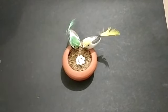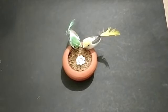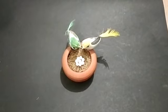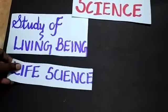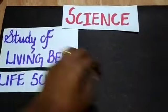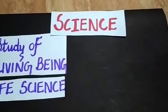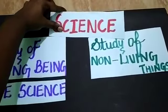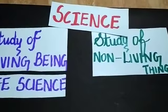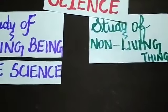So they have divided science into two broad categories — two groups. The first one is the study of living beings, which is called life science. The second one is the study of non-living things, which is called material science.